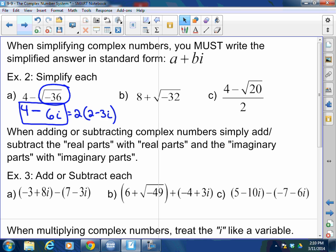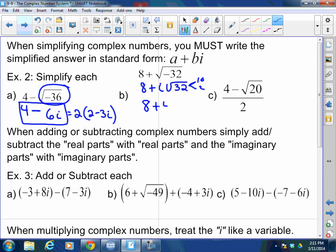8 plus square root of negative 32. Remember what I told you. Don't stress out with the negative. In fact, I always used to do this. I would go 8 plus i immediately. For whatever reason, once I took that negative out, once I pull it out as an i, everything just opens up and it's a lot easier. This is 16 times 2. So this is 8 plus 4i square root of 2.